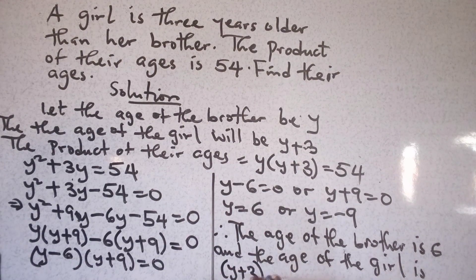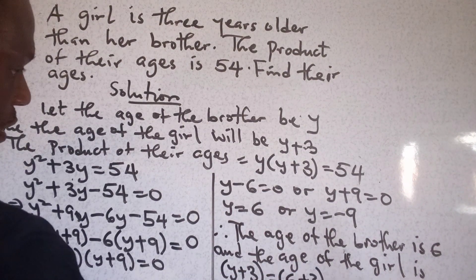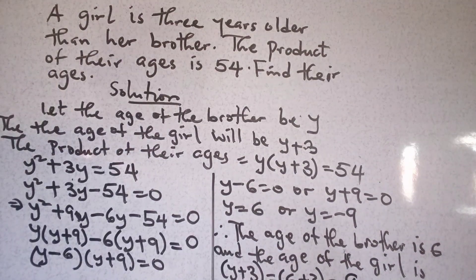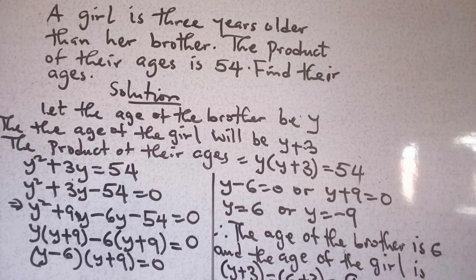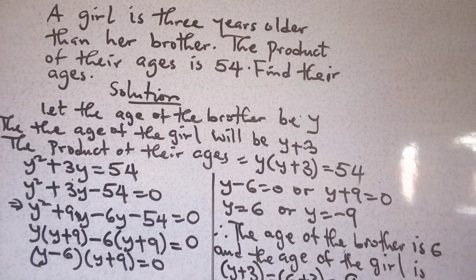Six plus three equals nine. The age of the girl is nine and the age of the brother is six. Thank you for listening.